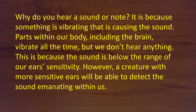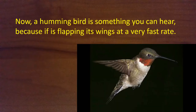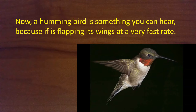Why do you hear a sound or note? It is because something is vibrating that is causing the sound. Parts within our body including the brain vibrate all the time, but we don't hear anything. This is because the sound is below the range of our ears' sensitivity. However, a creature with more sensitive ears will be able to detect the sound emanating within us. A hummingbird is something you can hear because it is flapping its wings at a very fast rate. Similarly, you'll be able to hear a bee approaching you with its constant buzz, and you can certainly hear an annoying mosquito as it hovers around your ears.